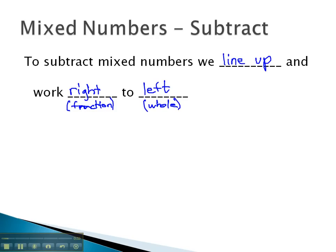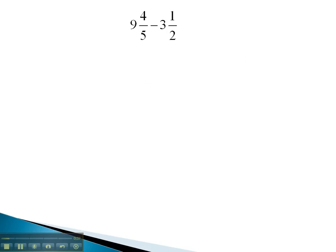Let's take a look at some problems where we subtract working right to left. In this problem, as we line up, we're taking 9 and 4 fifths and subtracting 3 and 1 half from it. Again, we will start on the right side, which means we're going to do these fractions first.